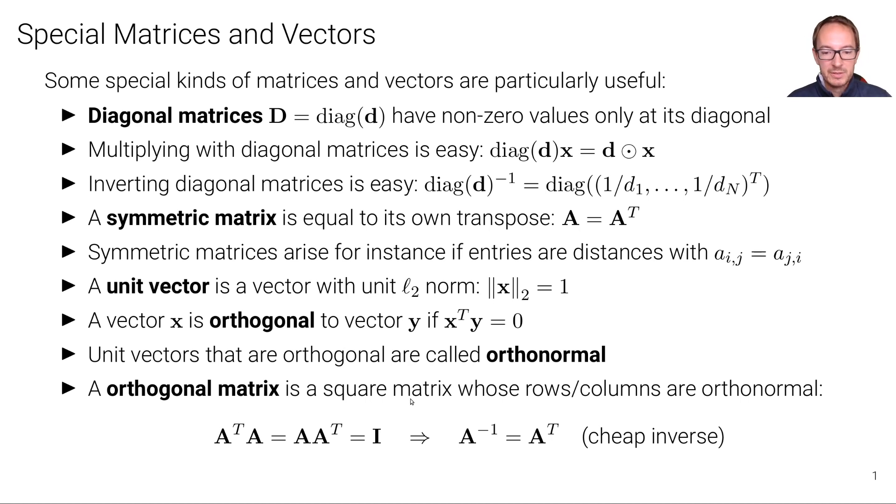And so for that matrix we have rows and columns that are orthonormal to each other, which means in other words that if we multiply A transpose to A, we get the identity matrix.